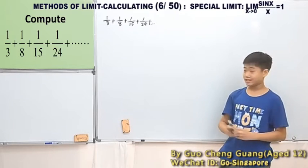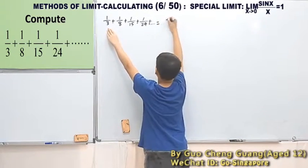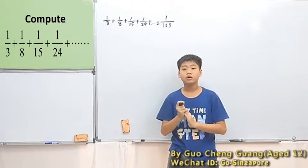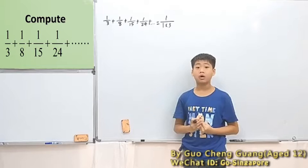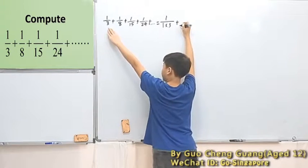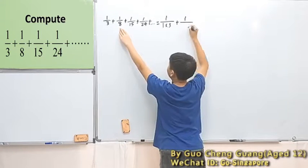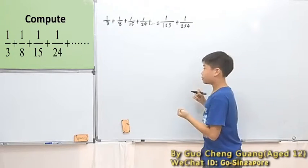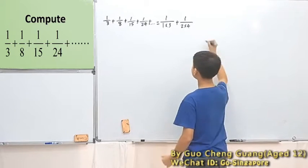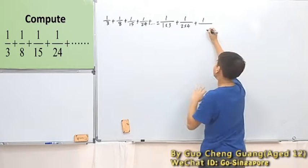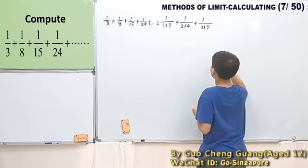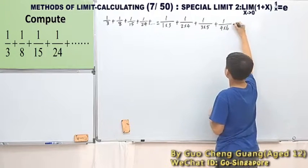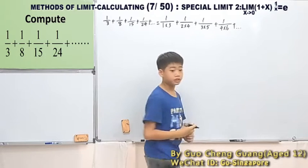So let me tell you what it is. This 3 you can change into 1 times 3 — I write it as 1 times 3 just to let you notice what kind of pattern is going on here. So, 1 over 1 times 3, plus 1/8 — you can change it into 2 times 4. It's just like using factors together, but you have to notice a pattern here. Then 15, I can change it into 3 times 5. Then 24, I can change it into 4 times 6, and so on.